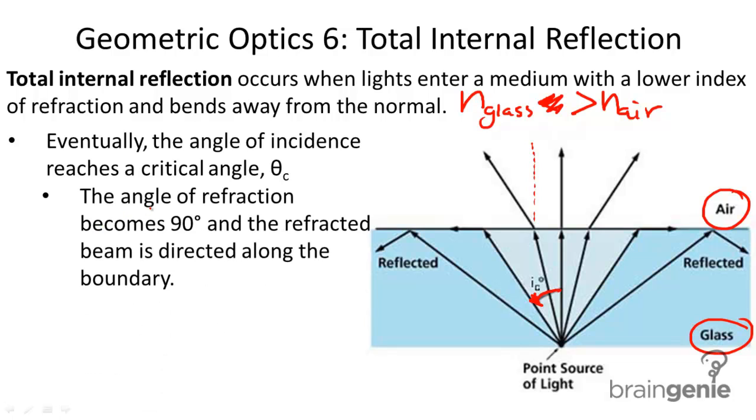At this critical angle, the angle of refraction becomes 90 degrees, and the refracted beam is directed along the boundary. We enter with an angle of incidence at the critical angle, and now you see light refracting along the boundary.